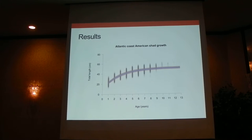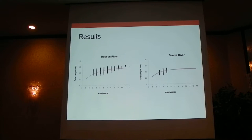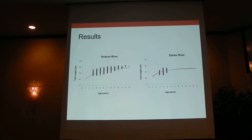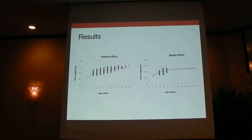We could also pull out specific populations. I've shown two here — the same axes of age in years on the x and total length in centimeters on the y. I chose these two specifically because you can see a lot of variability between the two systems. The Santee River is a semelparous population, and the Hudson River is along the northern extent of the iteroparous population. The nice thing about having that coast-wide growth curve is that we can actually fill in the gaps for systems where there's data on limited ages, and make assumptions based on those.